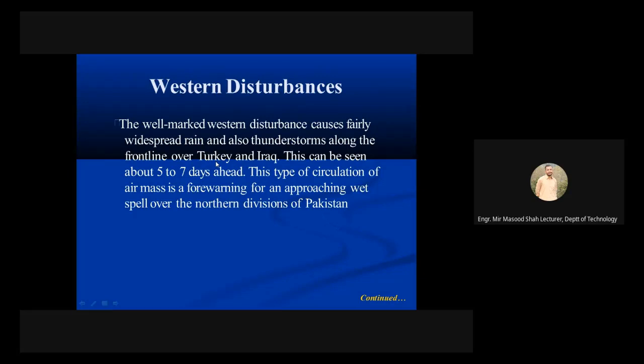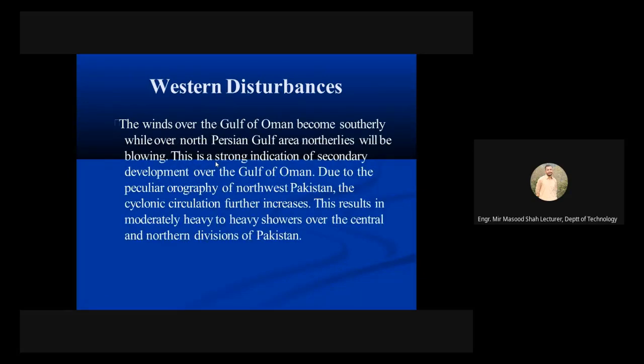The winds over the Gulf of Oman become southerly while over north Persian Gulf areas northerlies will be blowing. This is a strong indication of secondary development over the Gulf of Oman. Due to the peculiar orography of northwest Pakistan, the cyclonic circulation further intensifies, resulting in moderately heavy to heavy showers over the central and northern divisions of Pakistan.